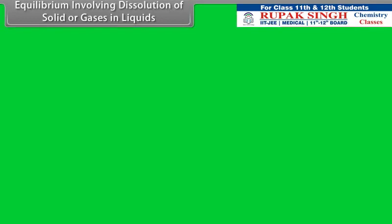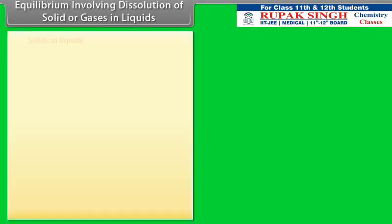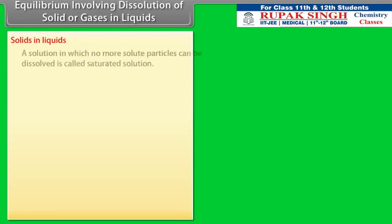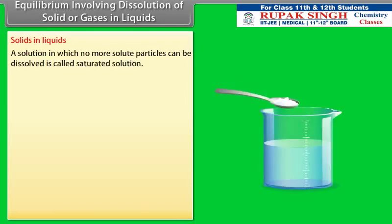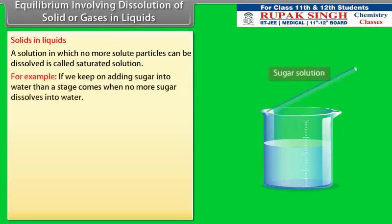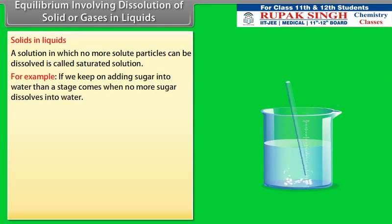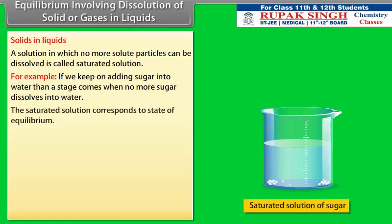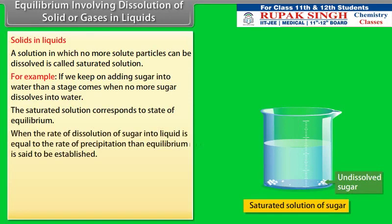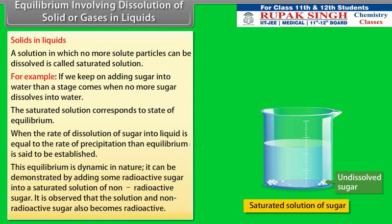Equilibrium involving dissolution of solid or gases in liquids — Solids in Liquids: A solution in which no more solute particles can be dissolved is called a saturated solution. For example, if we keep adding sugar to water, a stage comes when no more sugar dissolves. The saturated solution corresponds to a state of equilibrium. When the rate of dissolution of sugar into liquid equals the rate of precipitation, equilibrium is said to be established. This equilibrium is dynamic in nature.